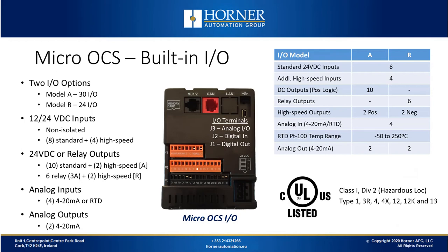Now let's talk about the Micro OCS with its built-in IO. With the Micro OCS, you've got two options. Model A is based around DC IO including DC outputs. Model R is based around DC inputs and relay outputs. There are 30 IO points with Model A and 24 with Model R. The inputs are 12 or 24-volt compatible and non-isolated. Eight of the inputs are standard inputs, four of which are high-speed, which could be used with high-speed counting type applications. Model A uses 24-volt DC outputs — 10 standard and 2 high-speed. Model R uses six relays rated for up to 3 amps, then two solid state outputs, plus two additional high-speed outputs that are not relay.